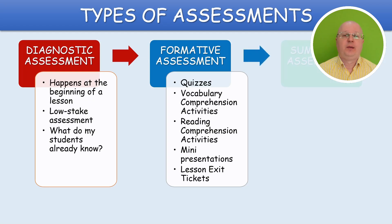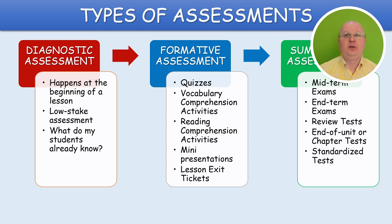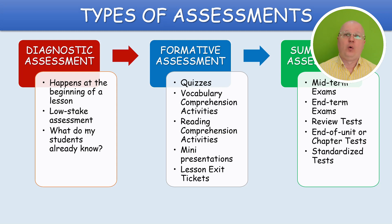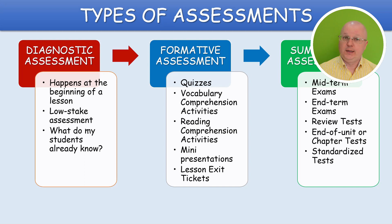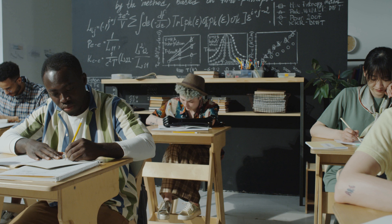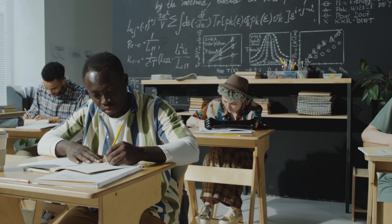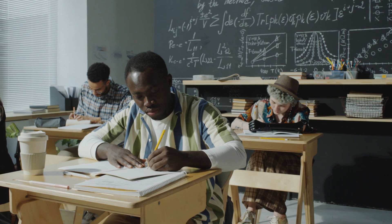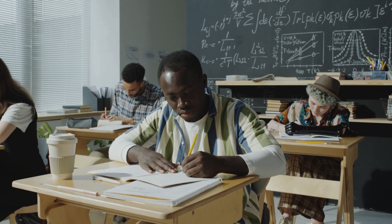Summative assessment aims to evaluate student learning and academic achievement at the end of a term or year by comparing it against a universal standard or school benchmark. Summative assessments are always graded, take place under controlled conditions, and therefore have more visibility. They include midterm exams, end-of-term exams, review tests, end-of-unit or chapter tests, and standardized tests like SATs or ACTs.